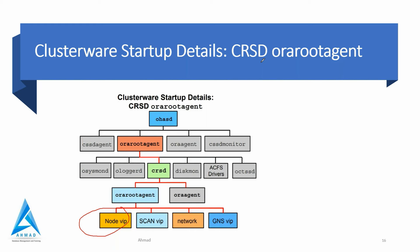If GNS is not used, the scan VIP addresses for the cluster can be defined in the DNS server used by the cluster nodes. Your node can be managed by GNS or DNS when you want to configure the network. The third process under crsd ora root agent is network - required network resources for the cluster are started. Another is GNS: if you are using GNS, the GNS VIP is used to resolve client requests to the cluster, and a single GNS VIP for the cluster is started.